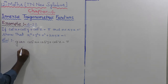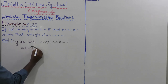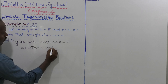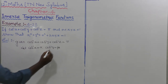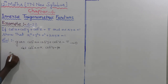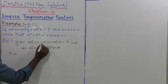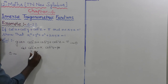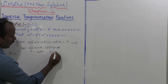Let us consider cos⁻¹(x) = α and cos⁻¹(y) = β. From these, x = cos α and y = cos β.